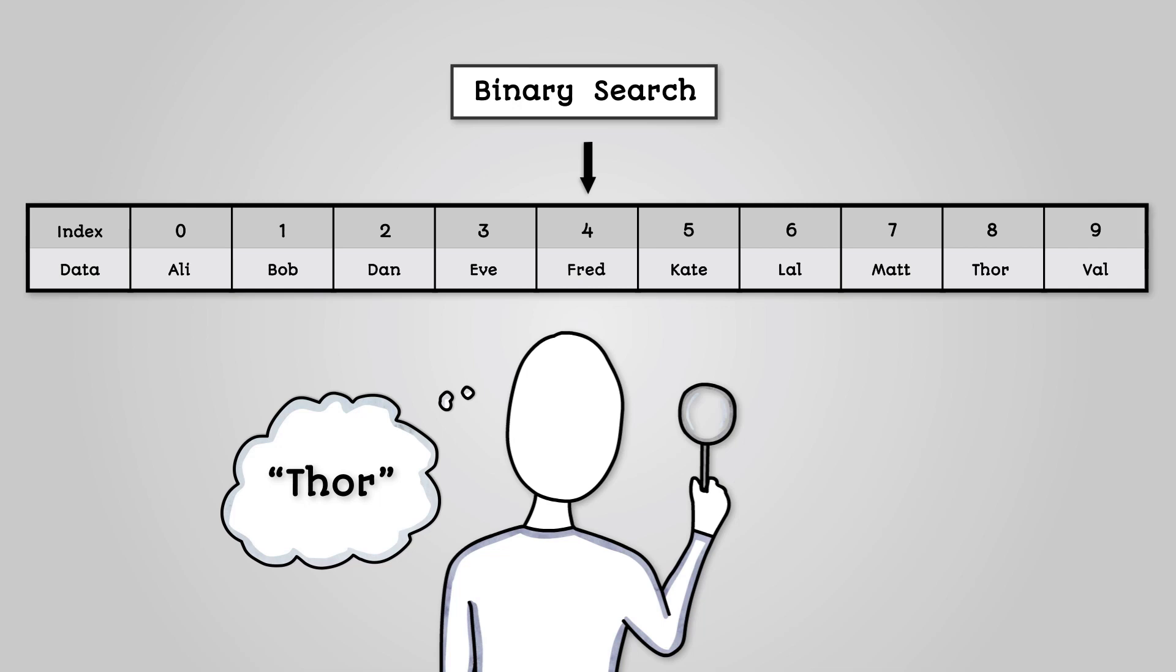It isn't as we are not searching for Fred. Check if Thor is greater than or less than Fred. It is greater as Thor is alphabetically higher than Fred. We then identify the middle index of this right half of the list. If the halfway point is between two values then we can either round up or down. Though whichever one we choose we must use consistently.